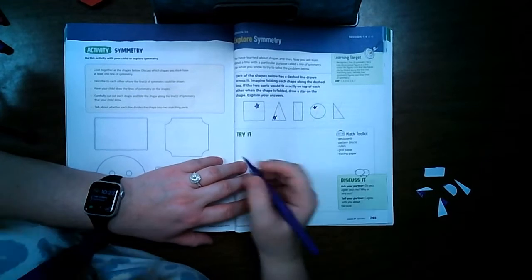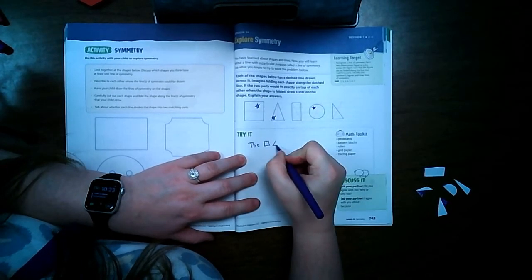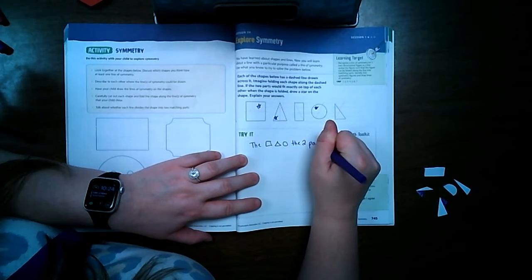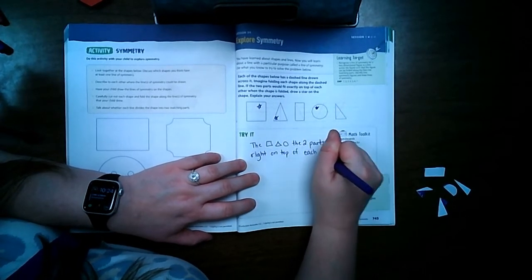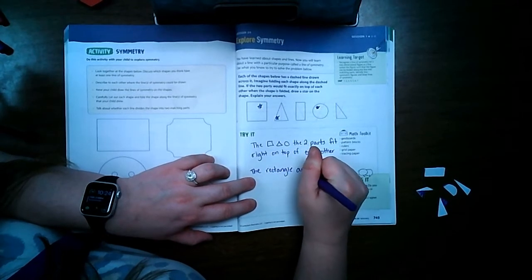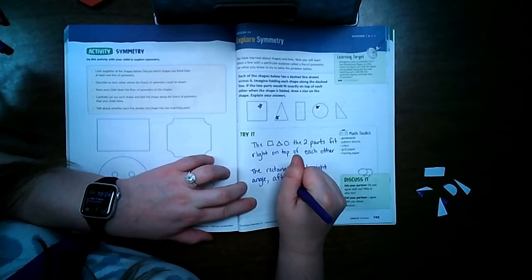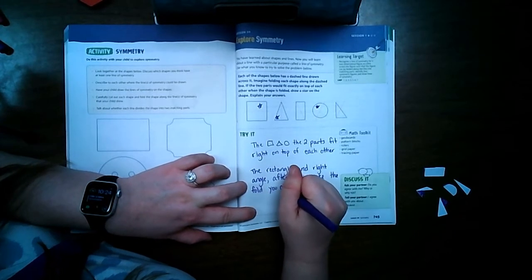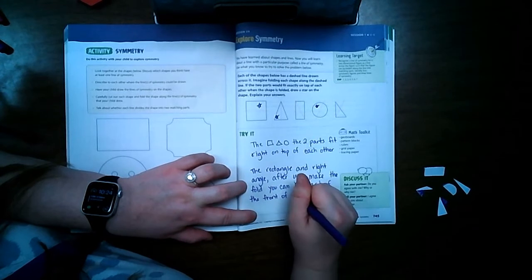So to tell which one is symmetrical, for example, the square, the isosceles triangle, and the circle, the two parts fit right on top of each other. The rectangle and right angle, after you make the fold, you can see that one part of the front of the shape.